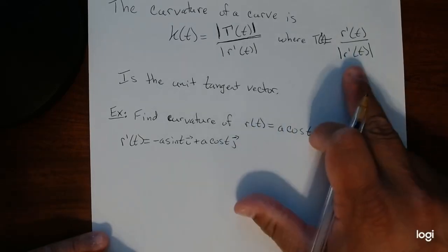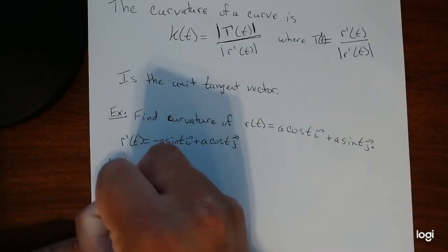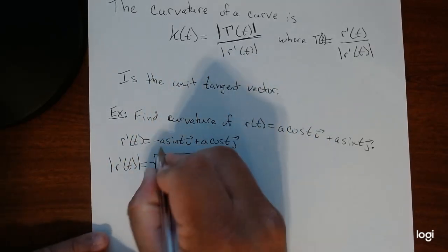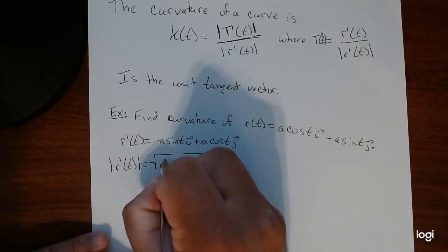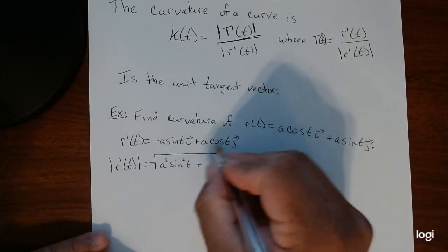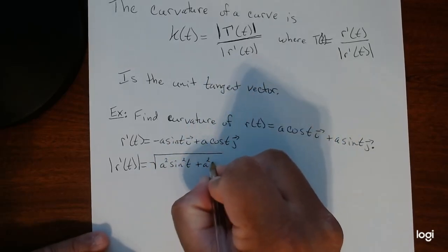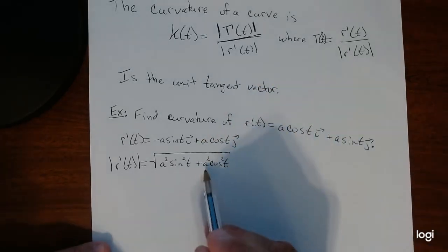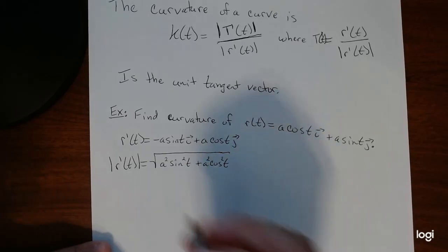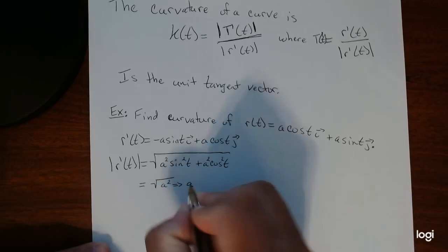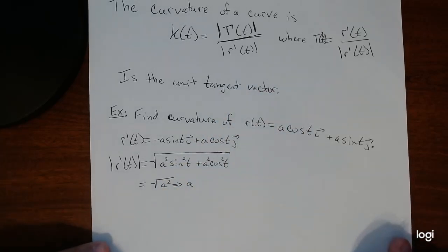At the same time, we'll find the length of r prime. That's equal to the square root of this squared, which gives you a squared sine squared, plus a squared cosine squared. If you factor out a squared, sine squared plus cosine squared equals one, so this is just the square root of a squared, which gives you a. The magnitude of the derivative of r is just a.